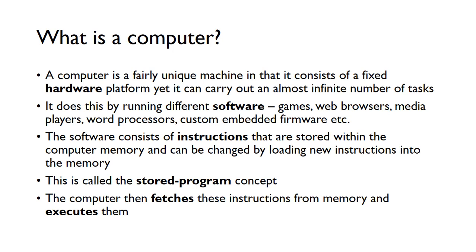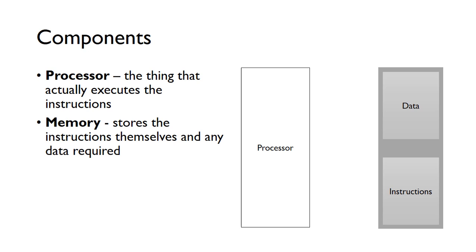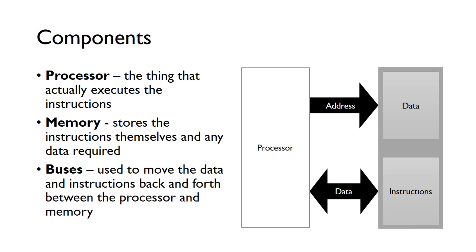Once there's a program, or a collection of instructions, in the memory, the computer fetches these instructions from memory and executes them, and that's what causes the games to run, the web browsers to run, and so on. The components that make up a simple computer are: the processor or CPU, which actually executes the instructions; separate memory, which stores both the instructions themselves and any data required; and buses, which are used to move data and instructions back and forth between the processor and the memory.